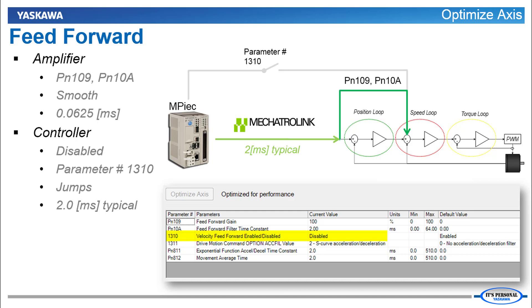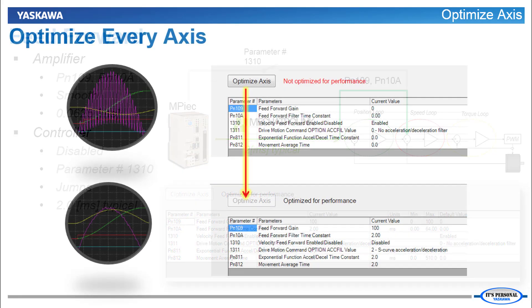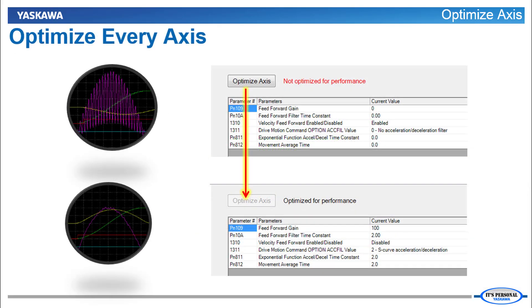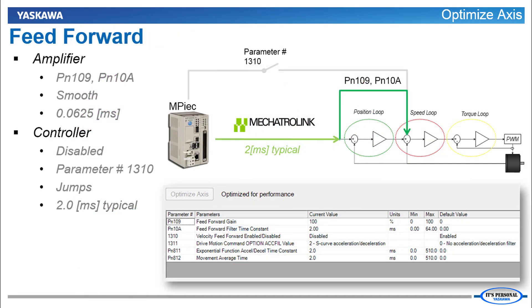After the servo is tuned for high performance, the response to the controller feedforward can result in many small jumps at every Mechatrolink cycle. Each jump produces a surge of motor torque, resulting in higher torque ripple and motor heating. Therefore, the controller feedforward is disabled.